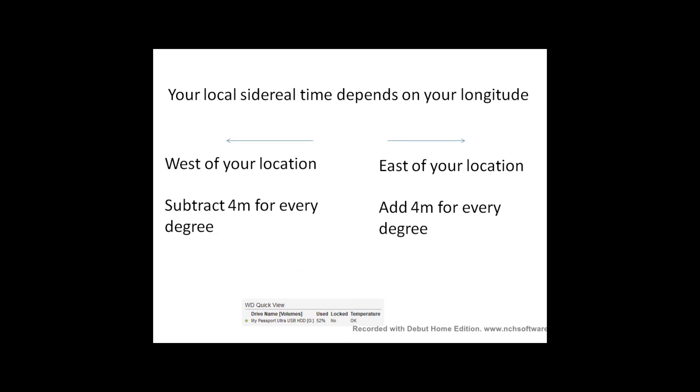Then lastly, your local sidereal time depends on your longitude. Just as your mean solar time depends on your longitude, so does your local sidereal time. East of where you are, you would add on 4 minutes for every degree. West of where you are, you would subtract 4 minutes for every degree. For example, if you're 2 degrees west of Greenwich, then your local sidereal time will be 8 minutes behind Greenwich sidereal time.